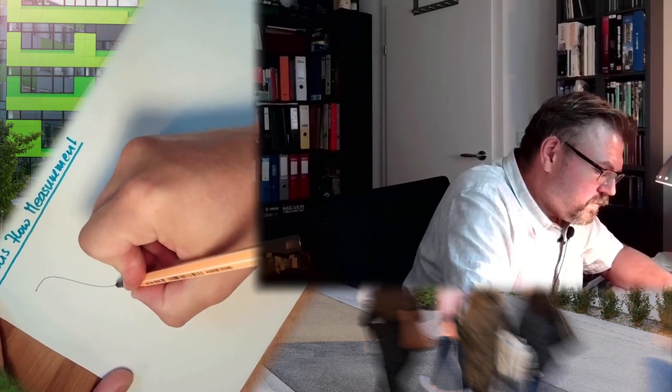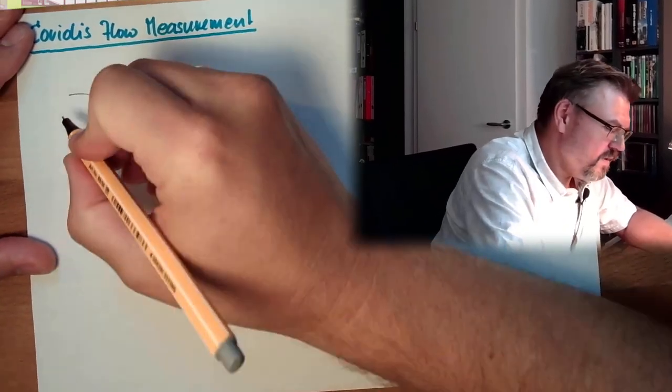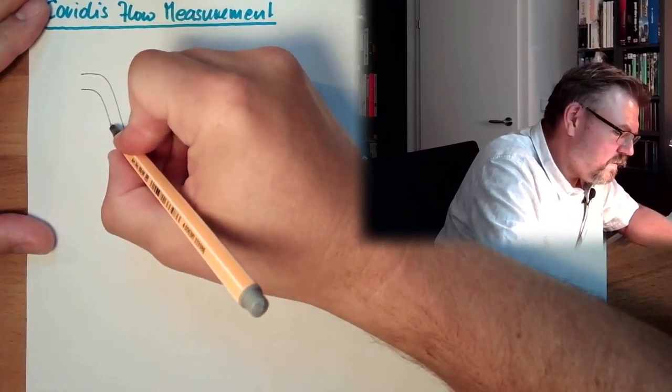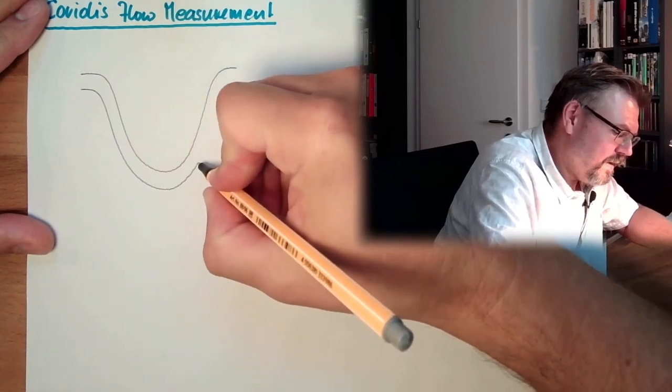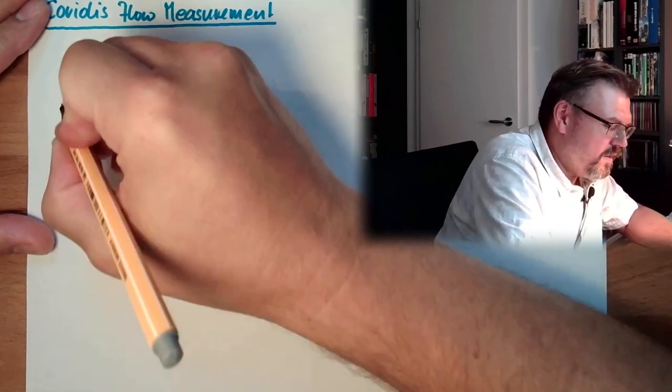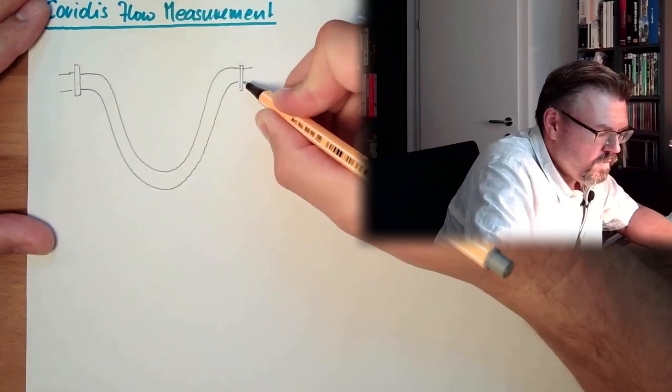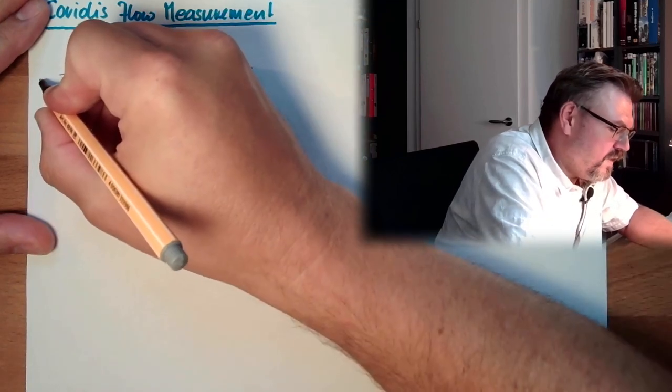Coriolis flow measurement is based on the Coriolis forces. So, how is this working? Inside such a flow meter, there is usually a tube which looks like that. Maybe a little bit too extreme, but it's something elastic. So it's not really a hose, but it is elastic. Here are the connectors. So here we have flow from this side to this side.